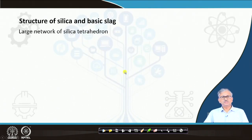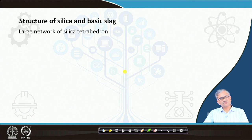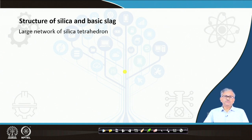Let us first see: silica is one of the major constituents of steelmaking slag. The very major constituents are silica, lime, and a few others. Silica percentage may be around 40 to 50 percent in the steelmaking slag. To understand the slag, we will discuss the basic structure of silicon - the basic slag structure.